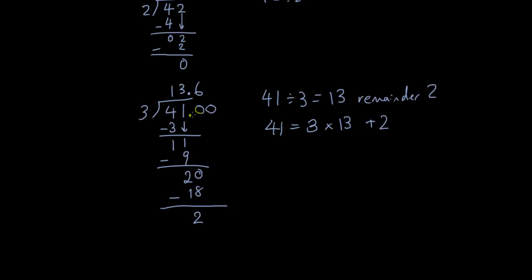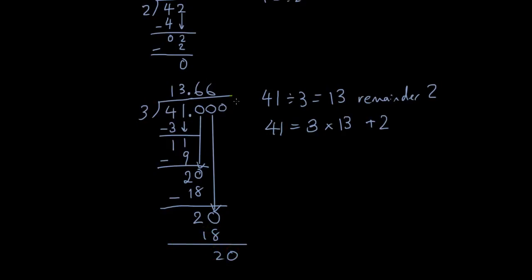You can keep adding zeros after the decimal point because it all means the same thing — it's 41 with an infinite number of zeros. Bring down another zero: 3 times 6 is 18, and it just keeps going forever. So the answer is 41 divided by 3 equals 13.6 recurring.